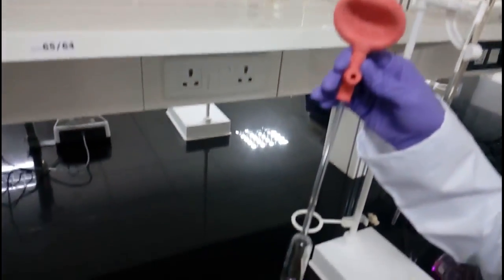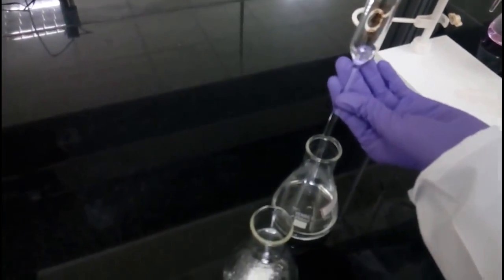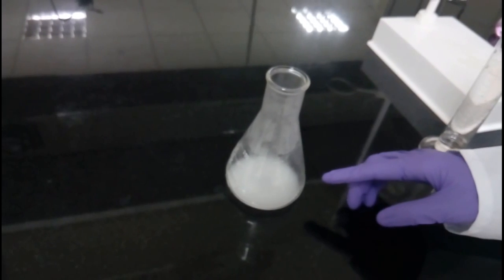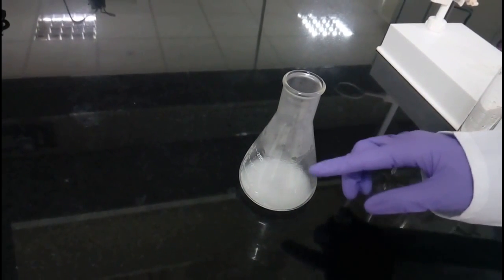Pipet out 25 ml of 0.1 normal HCl using a 25 ml pipet. Shake well until the tablet is totally dissolved in HCl. The bases present in the antacid are neutralized by the hydrochloric acid.